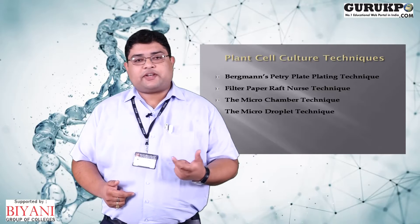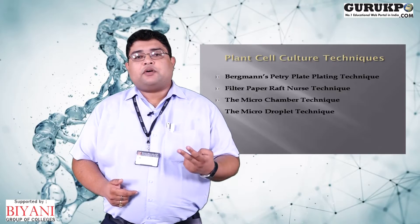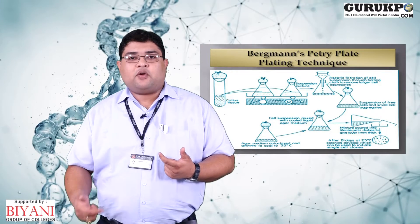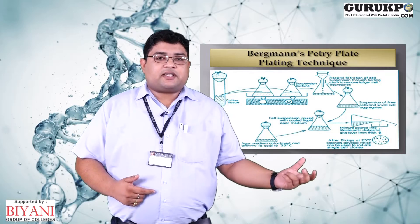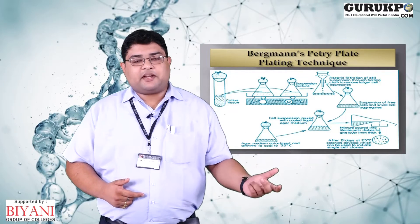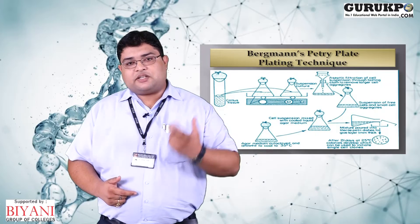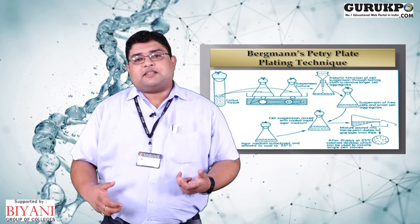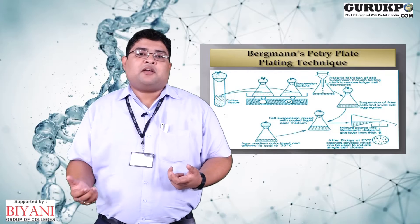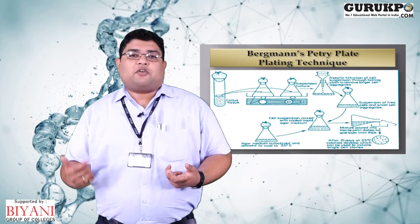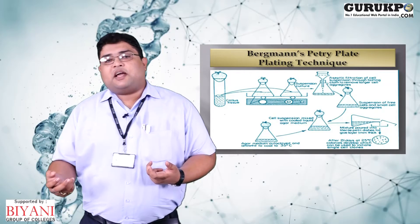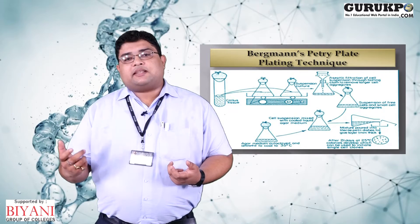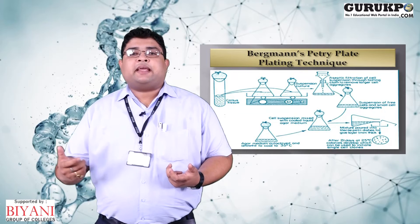In the Bergman's cell plating technique, the isolated cells obtained by mechanical or enzymatic method are grown inside liquid Murashige and Skoog (MS) media at half-liter concentration. Separately, one liter concentration of agar in half-liter MS media is melted and allowed to settle down at 35°C so that the agar can cool down slowly.